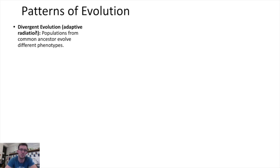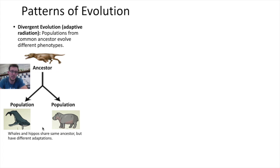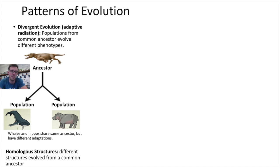The first type of evolutionary pattern is something called divergent evolution, which occurs when two populations with a similar common ancestor evolve in different directions. One example of this would be the whale and the hippopotamus. Both of these populations shared a common ancestor at one point in history, but over time, because they were in different environments, they evolved different adaptations. Different traits became more prevalent in each population until eventually they became different species. We would say that the whale and the hippo populations have homologous structures — structures that evolved differently from a common ancestor due to different environments.